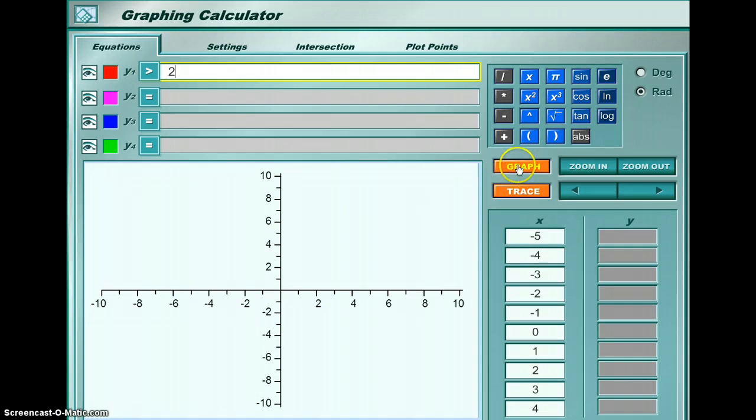The only thing I need to do next is hit the graph. And you can see that there's going to be a horizontal line crossing the y axis on 2, and then everything is shaded above.